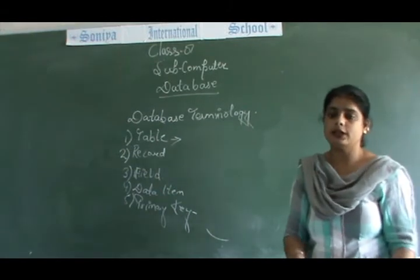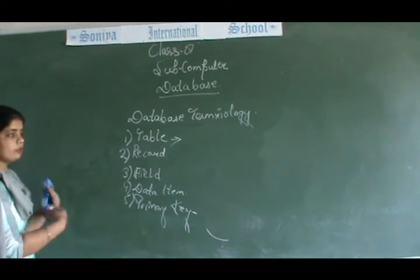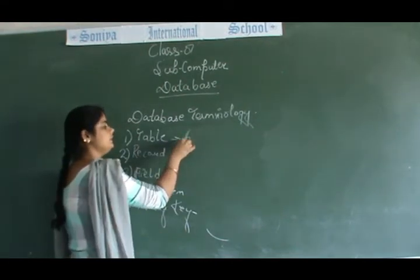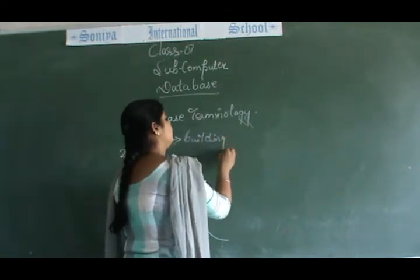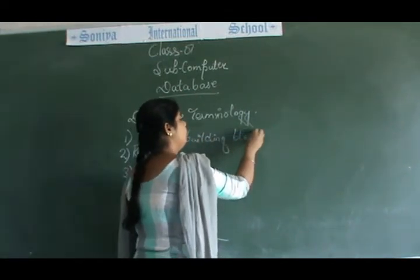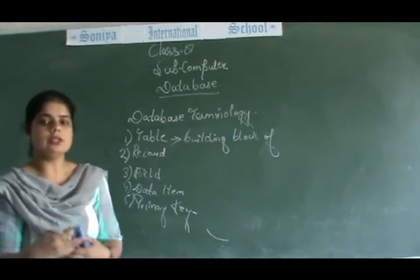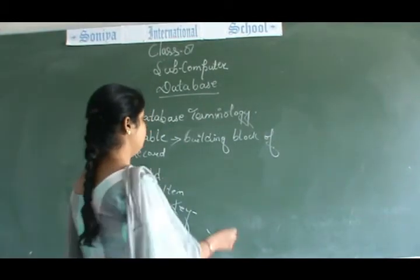Table: it is a collection of rows and columns. It is a building block of a database. Building block of a database. It is a collection of rows and columns. We can say it's a tuple, attributes. Building block of a database.